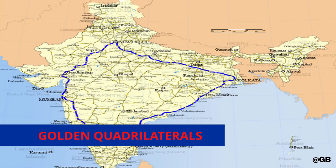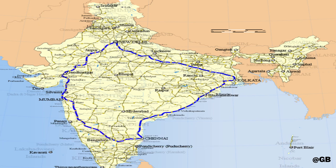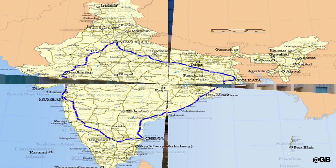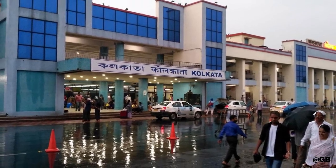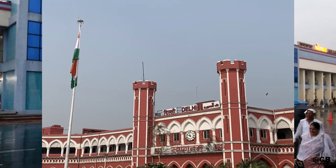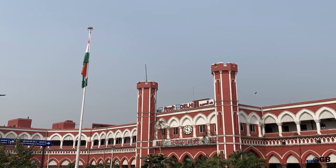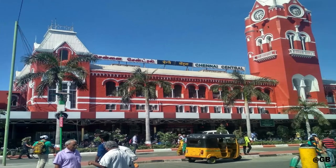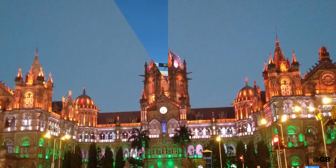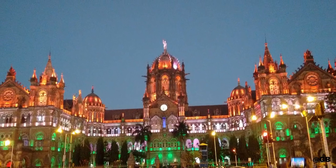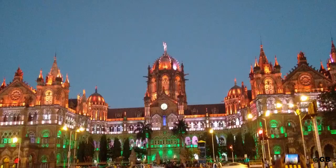Golden Quadrilateral. The term Golden Quadrilateral is not a technical term; instead, it is a word used to indicate the rail routes connecting the four metropolitan cities of India. As the name implies, the four golden corners are Delhi, Mumbai, Kolkata, and Chennai. Although they sum up to only 16% of Indian Railways' total rail network, they carry 65% of the freight and 55% of the passenger traffic.